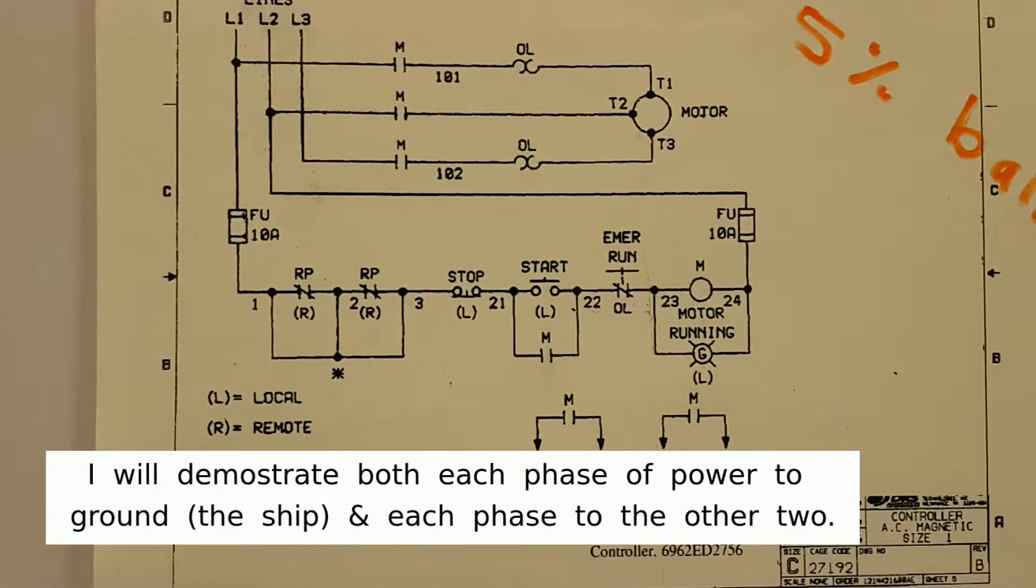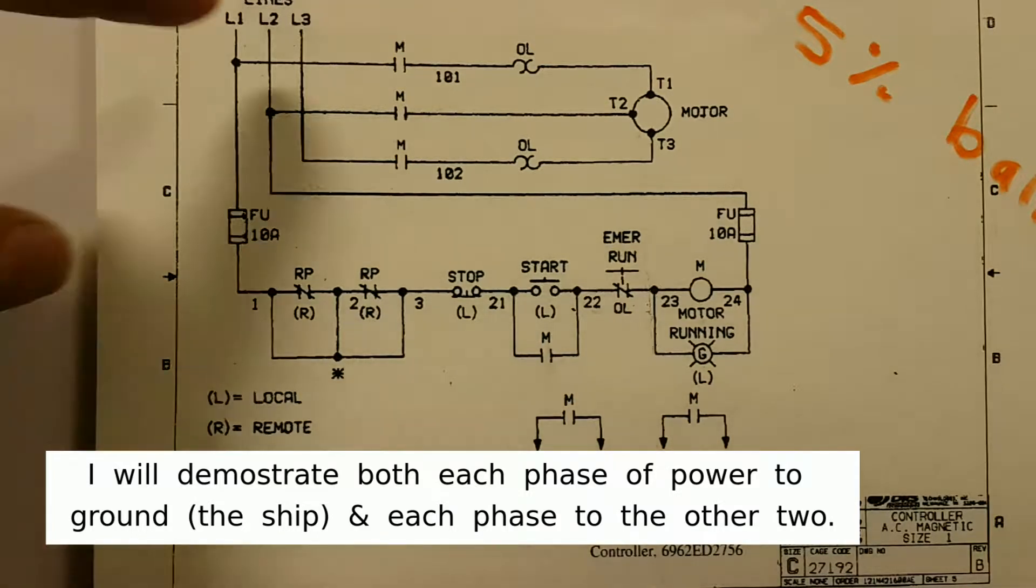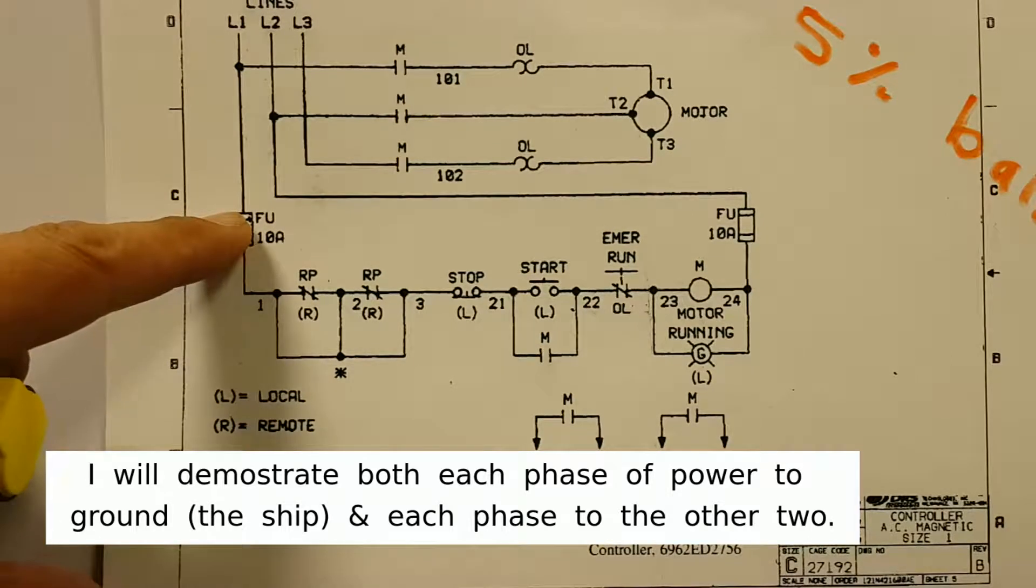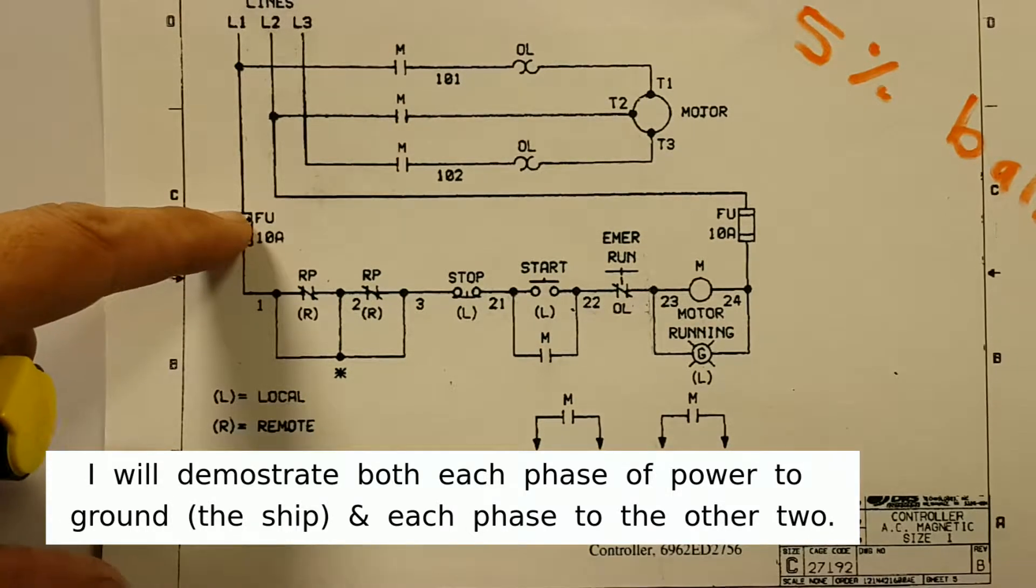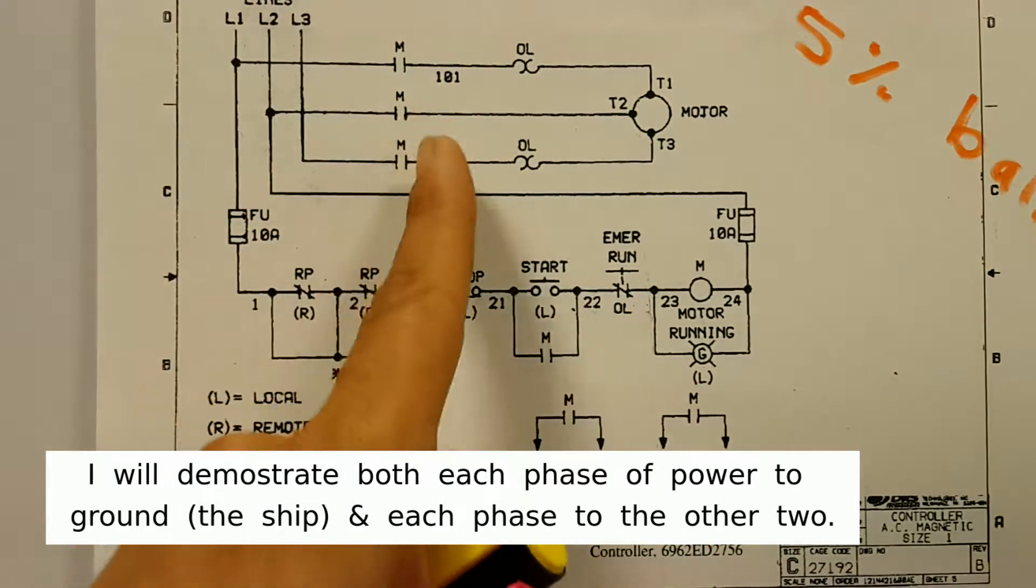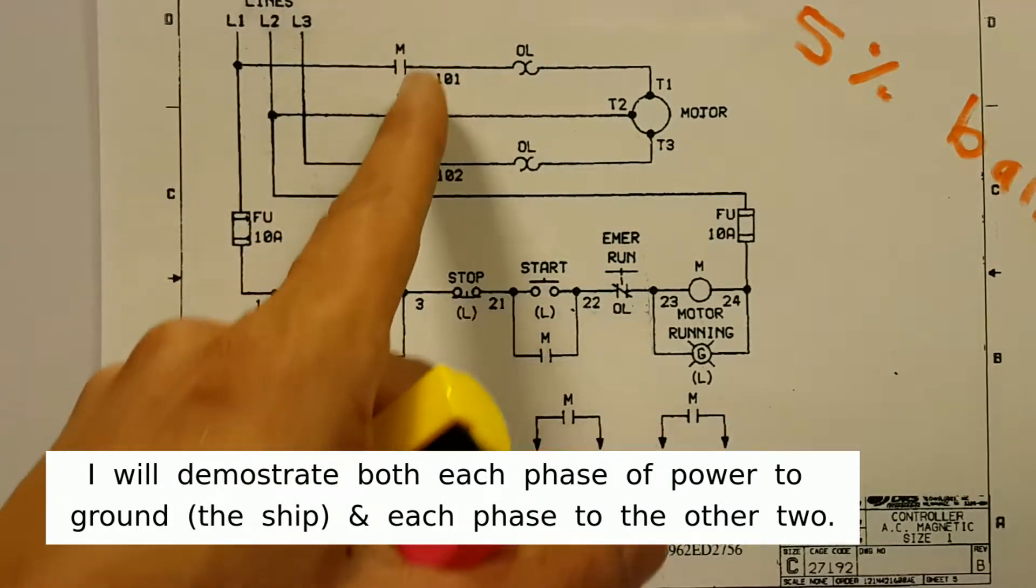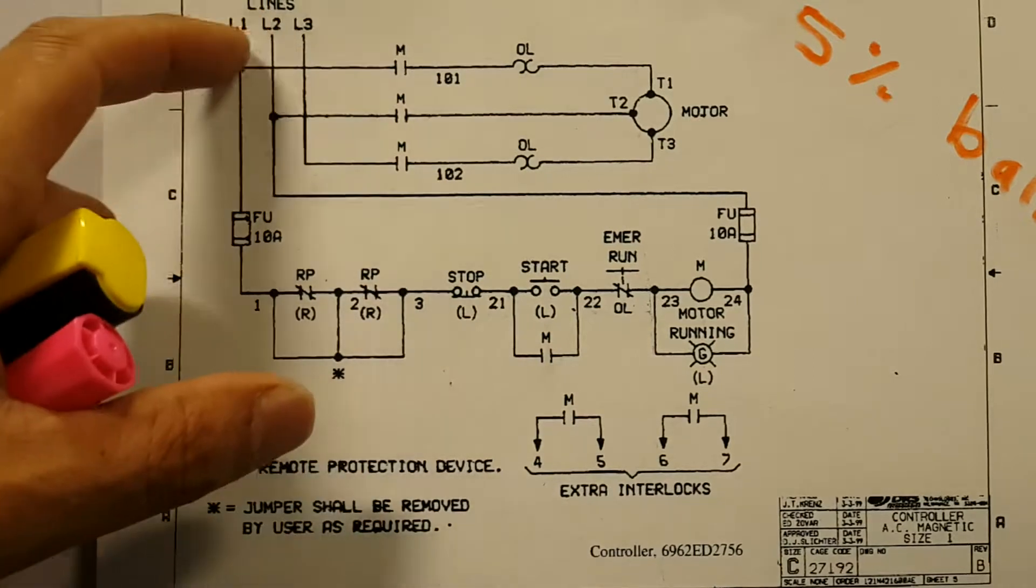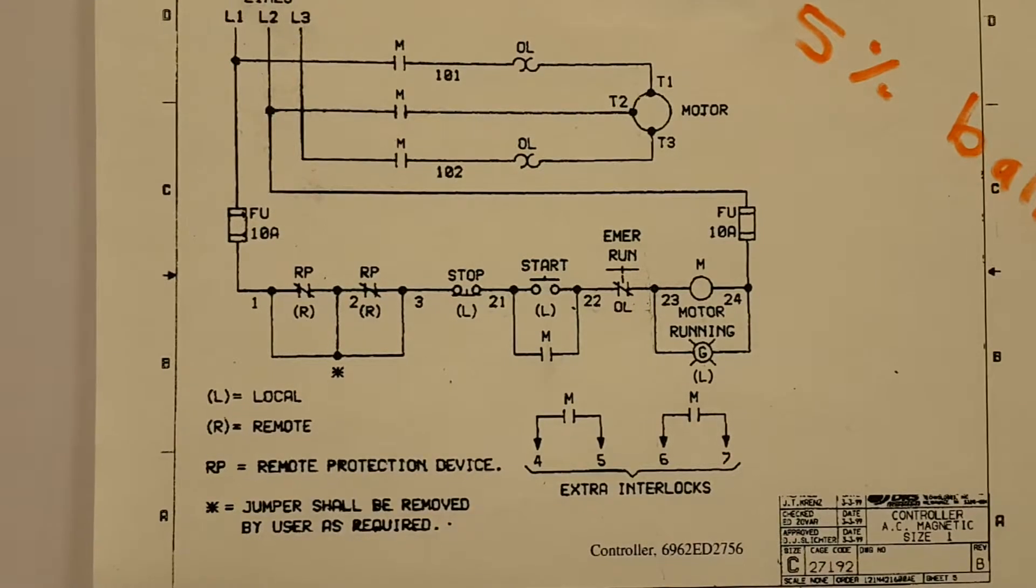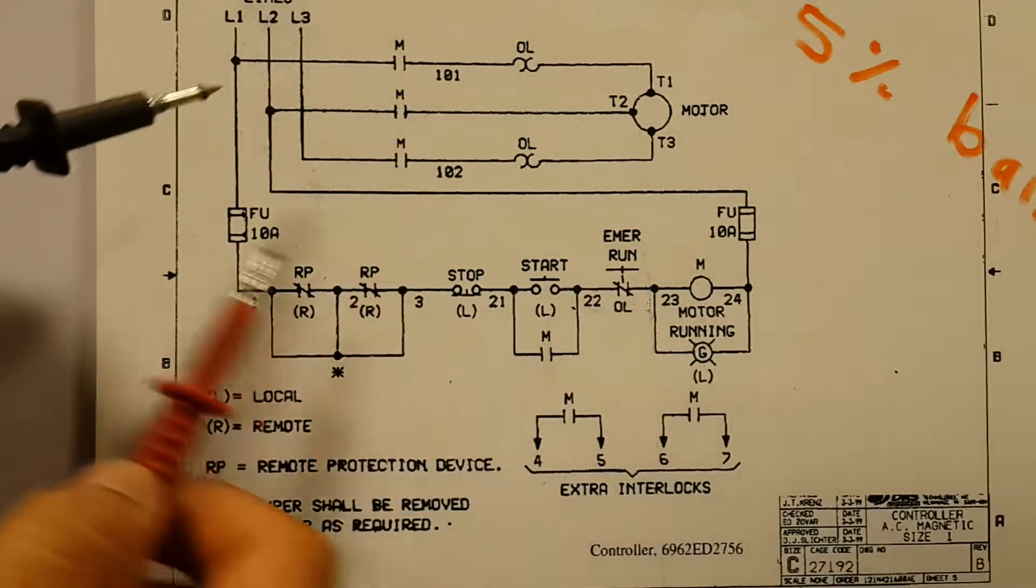Now if I want to check for voltage, I will be going to L1, L2, and L3. I will find L1 on top of this fuse, I will find L3 on top of that fuse. They are very easy to find. I can also find them at the top of these contacts. So definitely for L2 I will have to read it at the contactor.